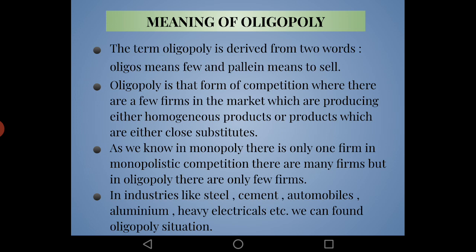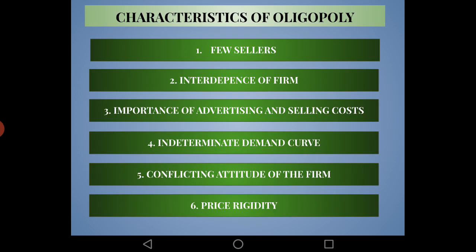There are many industries where we can find an oligopoly situation. Now let us discuss the characteristics of oligopoly. The first characteristic is few sellers. In oligopoly there are only few sellers in the market, producing either homogeneous or differentiated products. Sometimes there is competition among the few, but when there are only few firms, each one accounts for a substantial part of the total output and has a noticeable impact on market conditions.